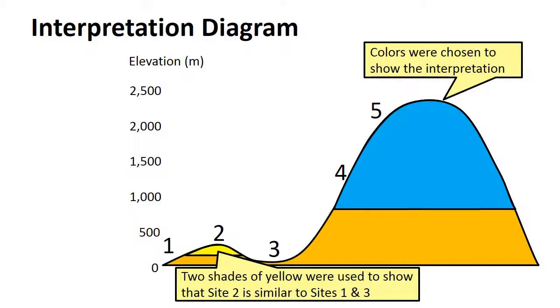The two big groups were colored differently. The blue area shows the upper elevation group at sites 4 and 5. The yellow area is the lower elevation group, consisting of sites 1, 2, and 3. The subgroup in the lower elevation, site 2, was made a similar color as the larger group in which it fits.